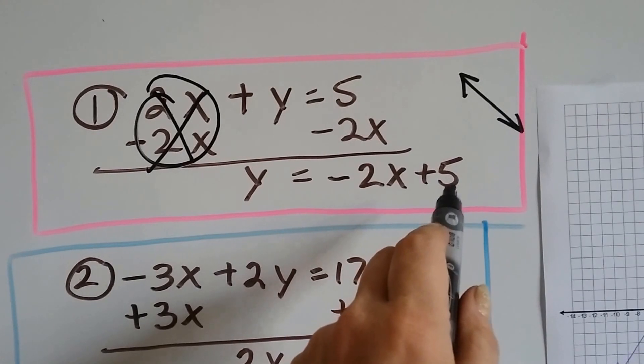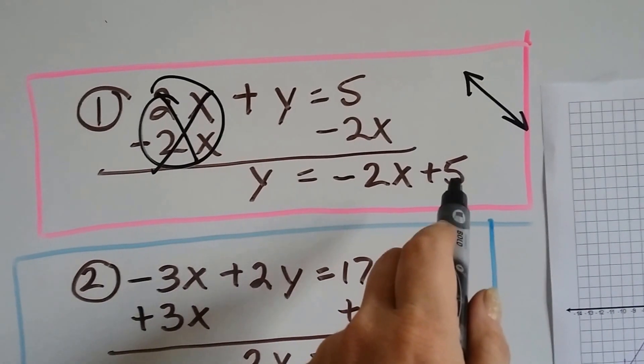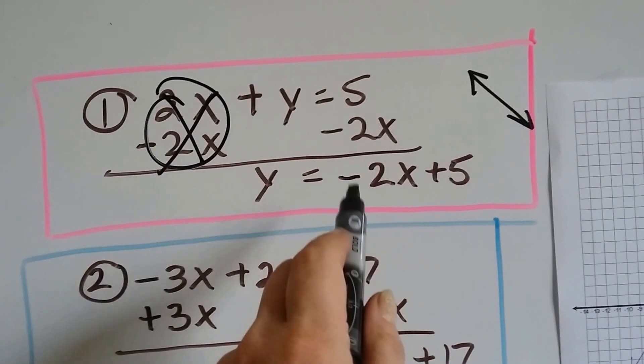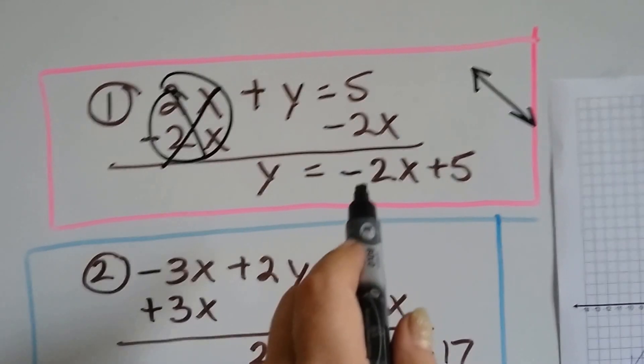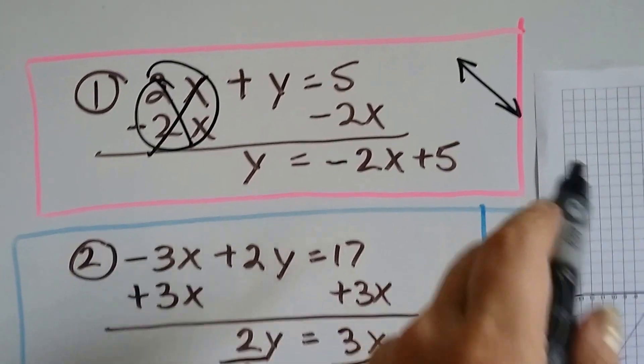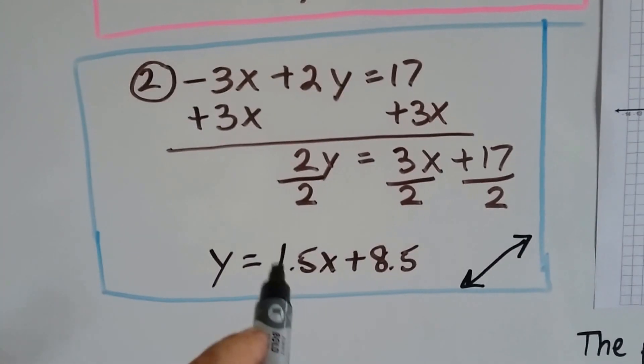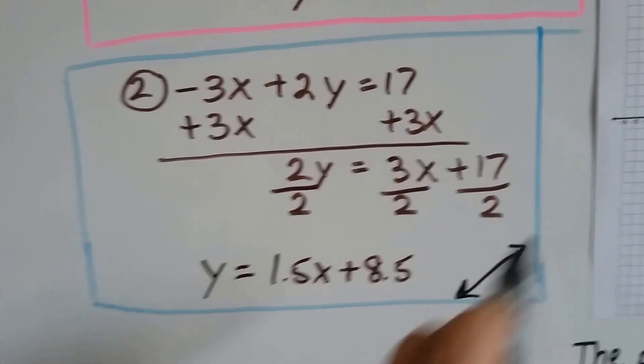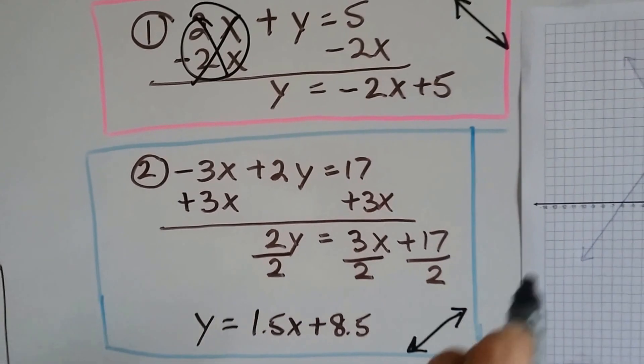And we know the 5 is our y-intercept, that's where it's going to hit the y-axis, and we know our slope is a negative 2. And remember, when the slope is a negative, it falls to the right, it goes this way. This one's going to have a positive 1.5, so it's going to go this way. See, it rises to the right.